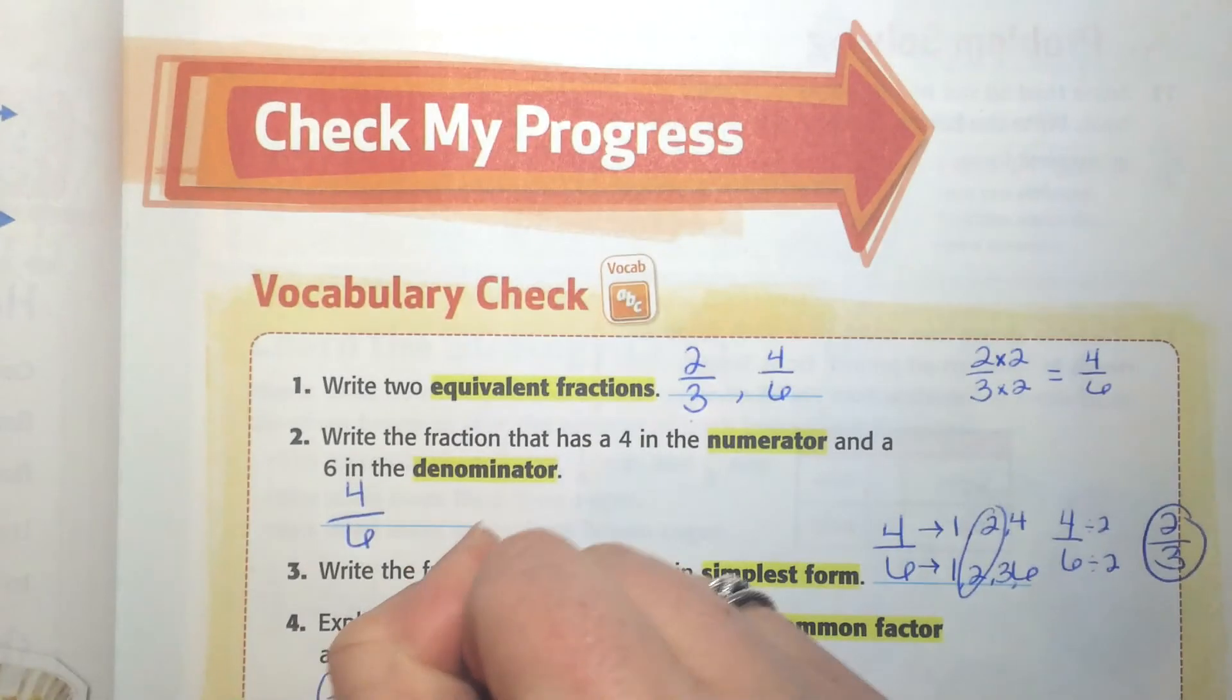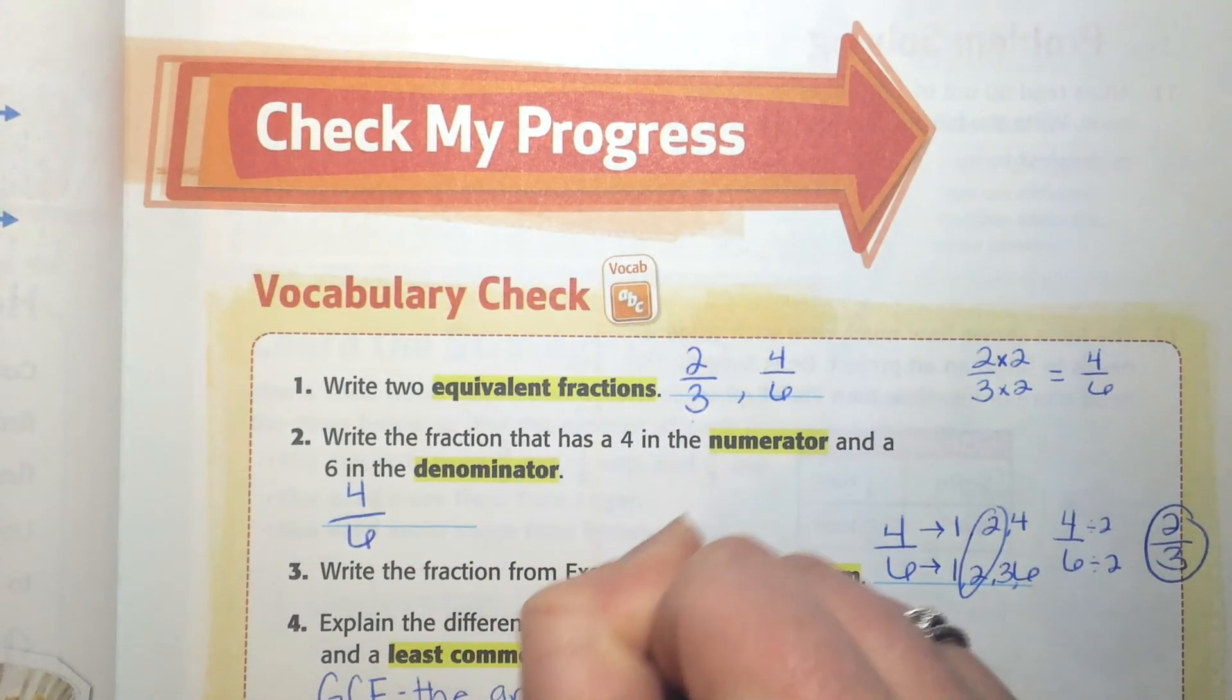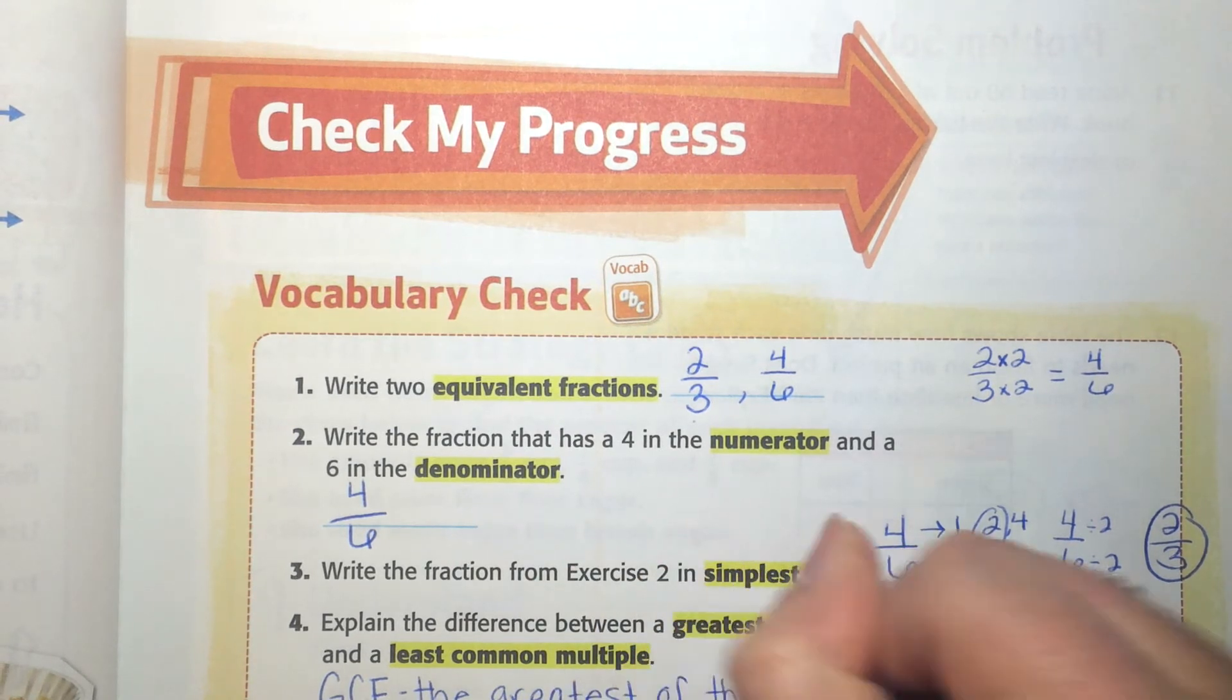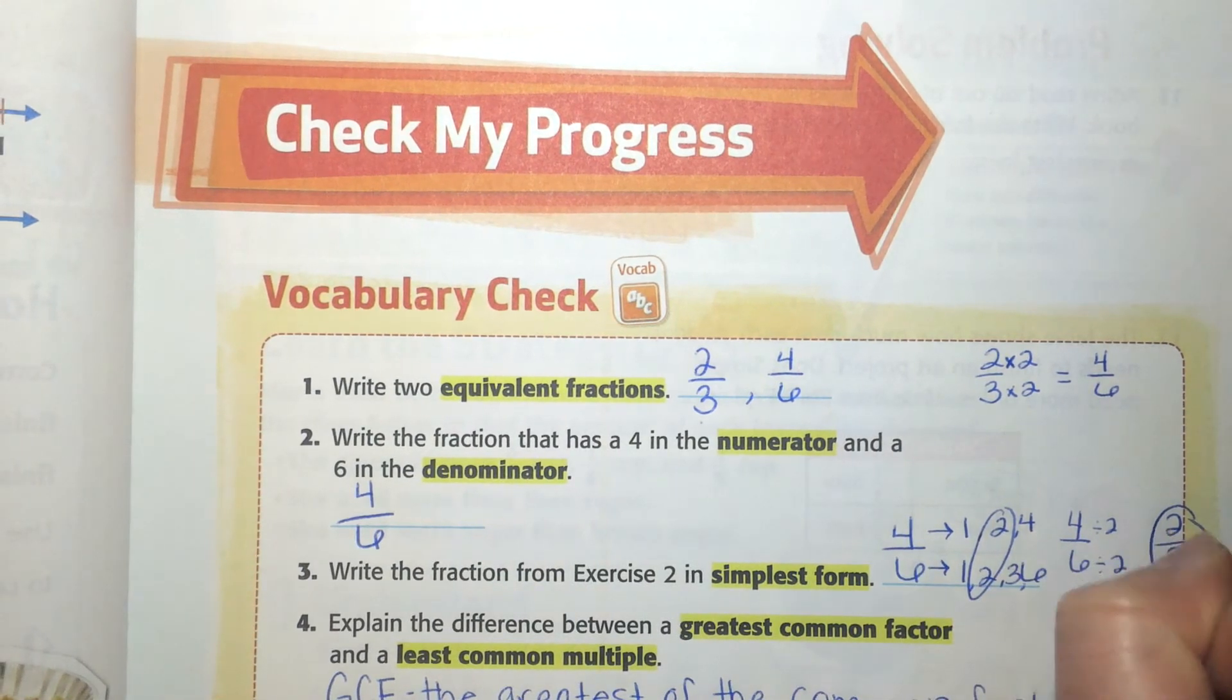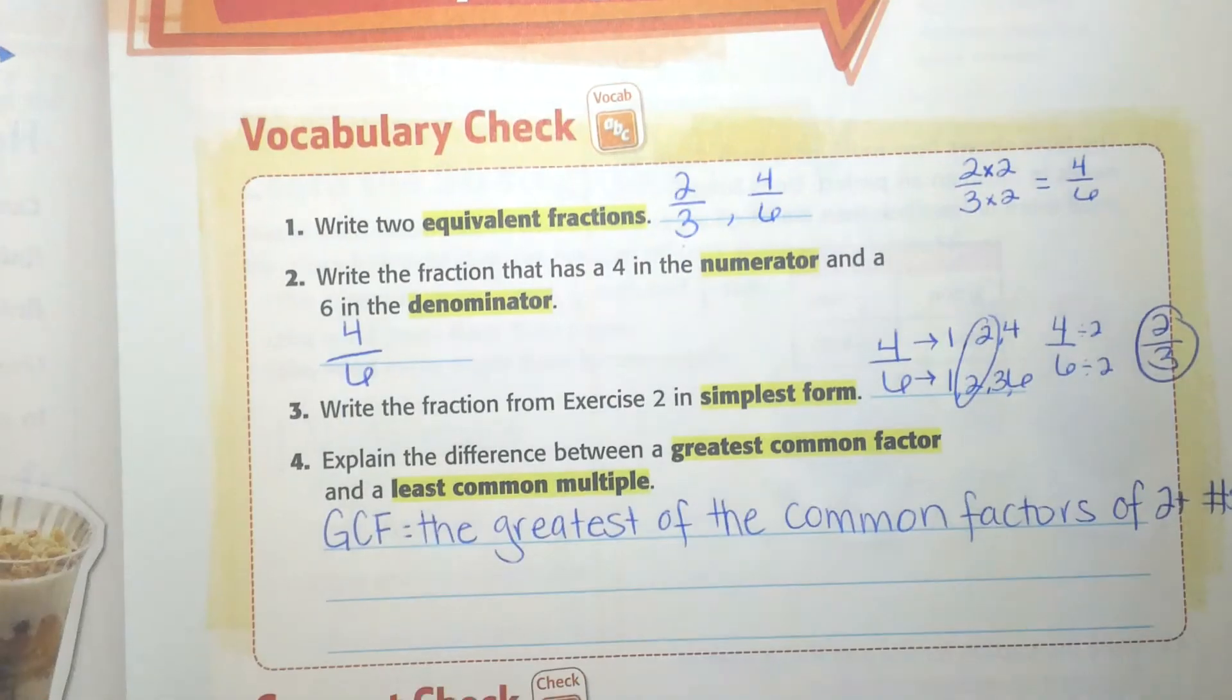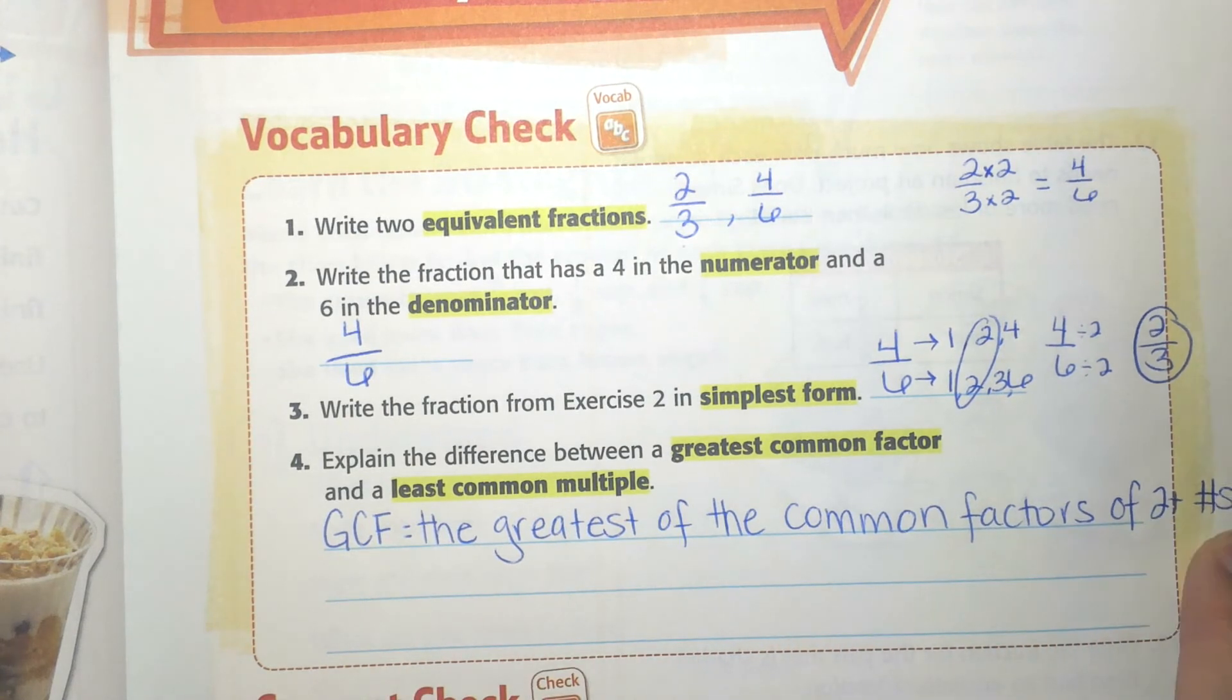So I'm going to write that here. The greatest of the common factors of two plus numbers. So I put the greatest of the common factors of two plus numbers.